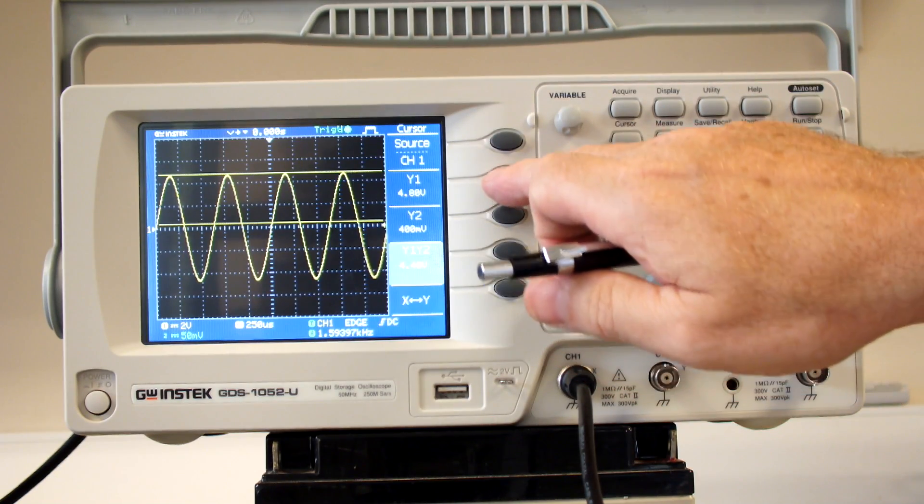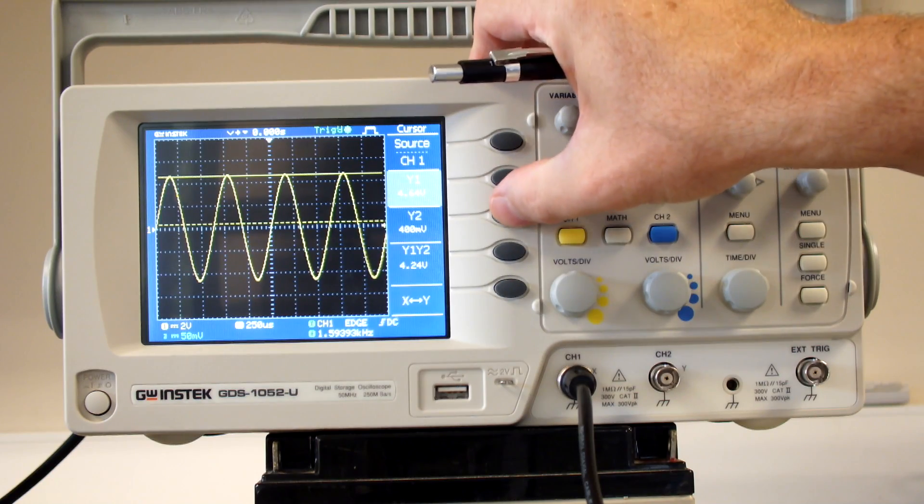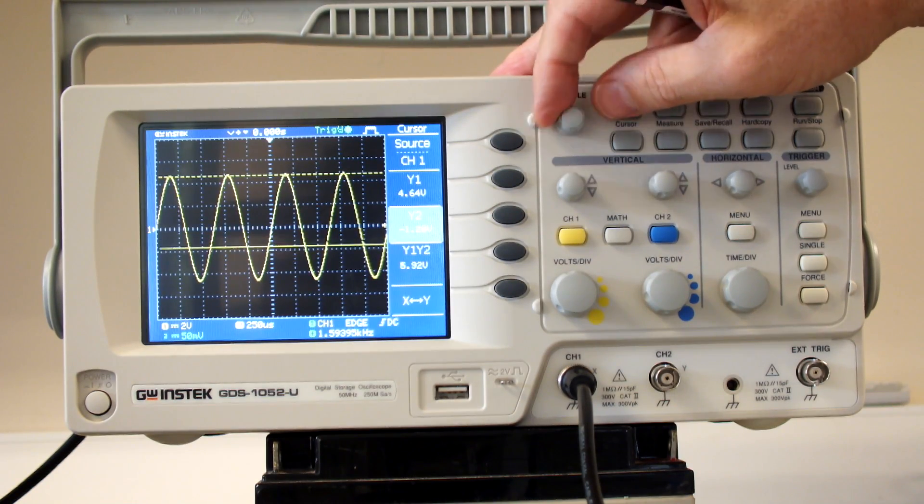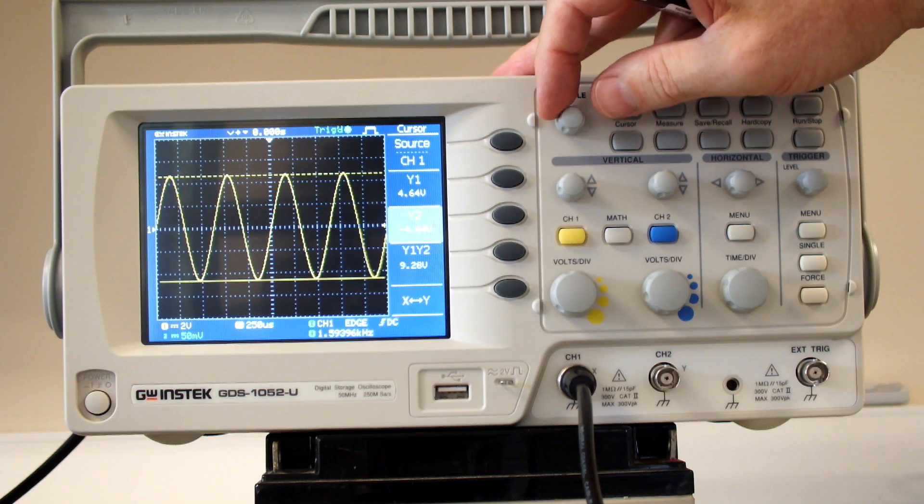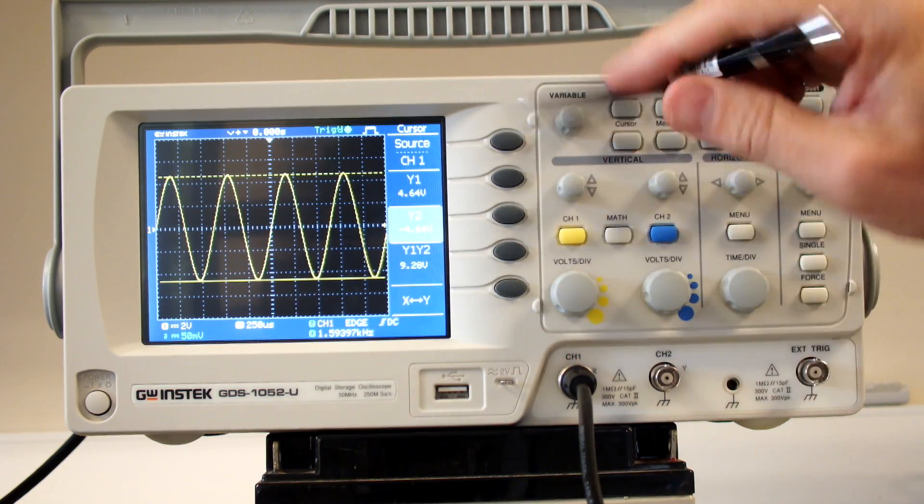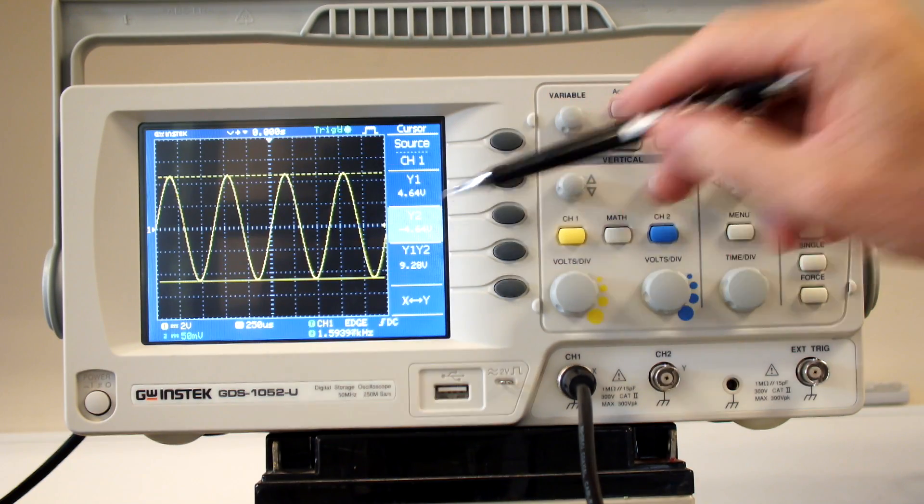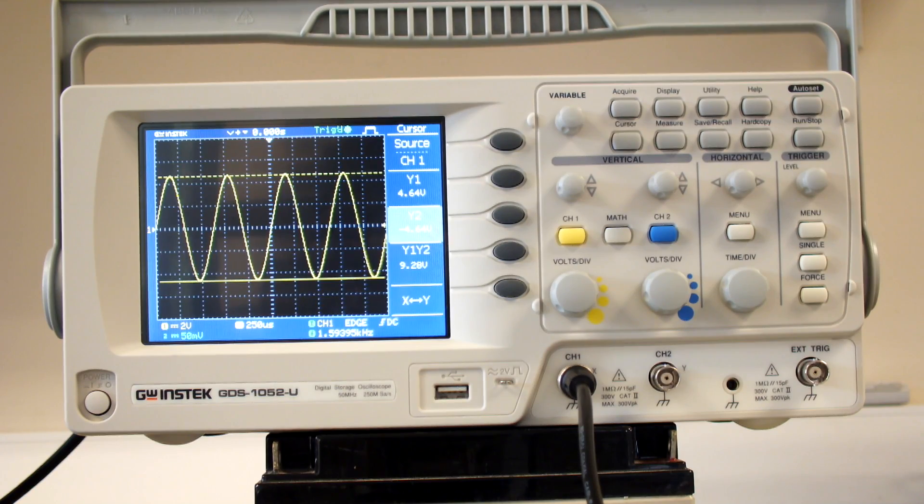You'll notice I've got two cursors and they're both moving together. If I select just Y1, I can move Y1 independently. Select Y2, I can move Y2 independently. Y1-Y2 is actually measuring the voltage between here and here, so I've got a measurement of the peak-to-peak voltage.